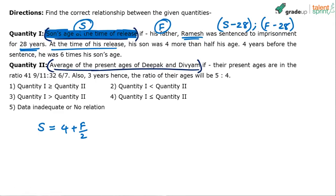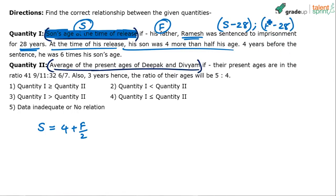Remember: S-28 and F-28 are ages at the time of sentencing. The next point: 4 years before the sentence, the father was 6 times his son's age. At the time of sentence, the father's age was F-28, so 4 years before the sentence, the father's age was F-28 minus 4.